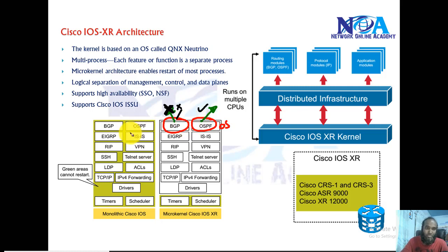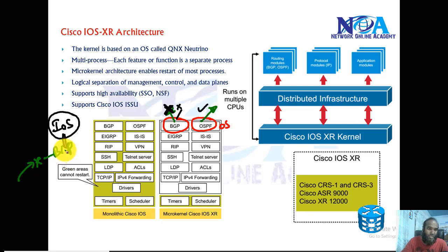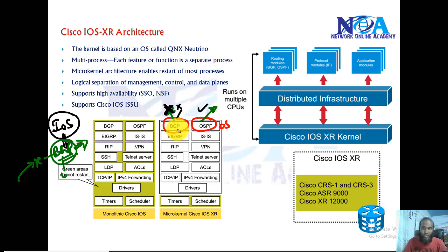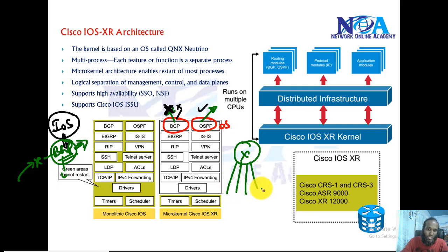Every protocol runs in its own memory space, which is unlike traditional IOS where all protocols run in the same memory space. In IOS, if there is any failure — such as an attack or overhead on one protocol — it can impact the entire router and may cause an immediate reboot. In IOS XR, this isolation is a key feature, especially important in service provider networks where a fault with one customer should not impact others, since these routers connect to multiple customers.